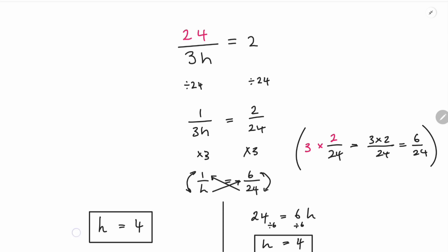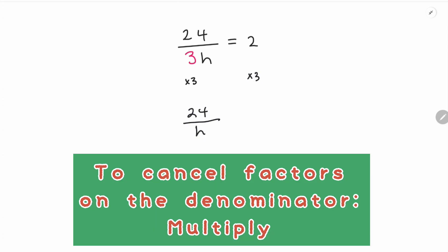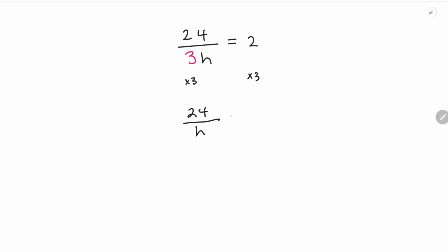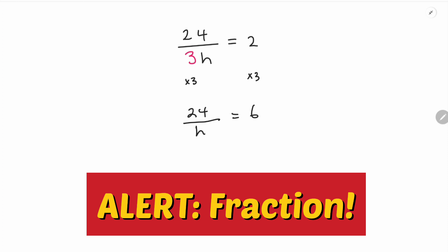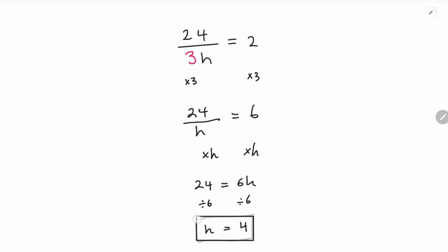What happens if we start with the 3? We multiply both sides by 3 because it's on the denominator — divide by 3, so the opposite is times 3. We're left with 24 over h on the left. Now multiply by h to get rid of the fraction, giving 24 equals 6h. Then divide by 6 on both sides: h equals 4. It's not wrong, but splitting the denominator that way is probably not the best method.